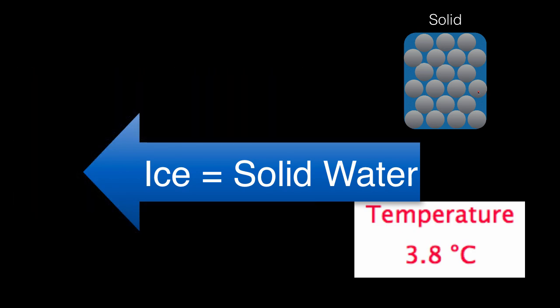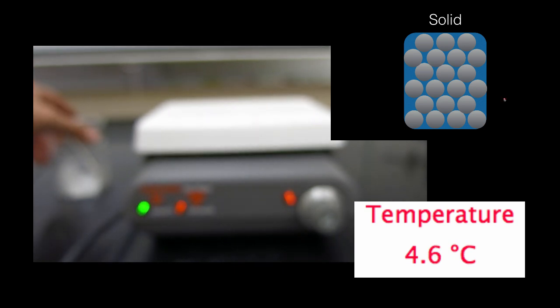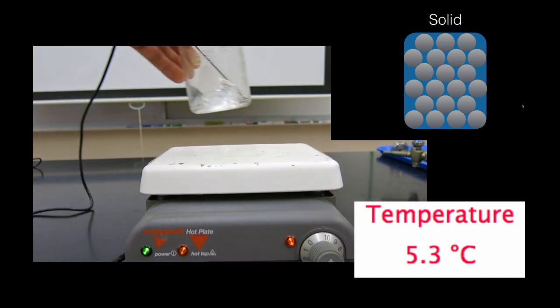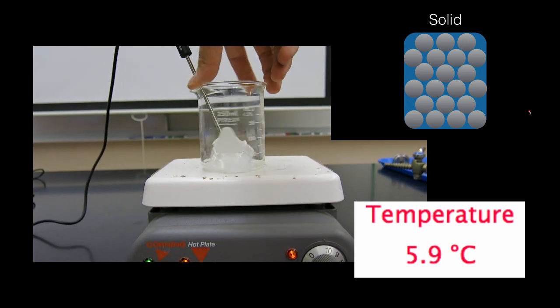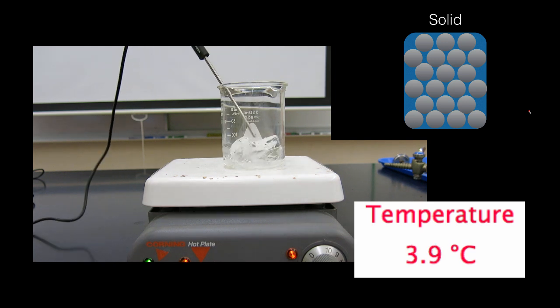If the particles in a solid aren't arranged in a pattern, it's called an amorphous solid. Solids have a definite shape and a definite volume. Ice is usually a crystalline solid. It is possible to have amorphous ice, but most of the ice on Earth is crystalline.